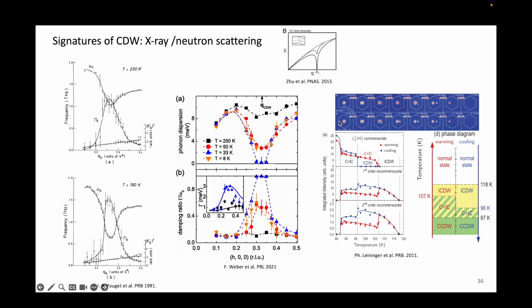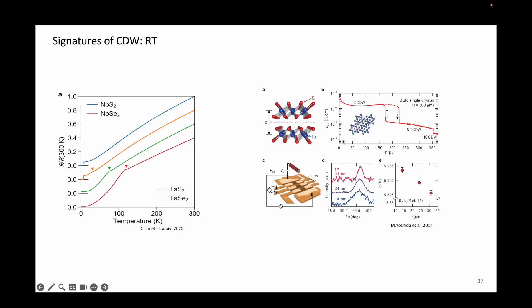Next is the R-T measurements. This is perhaps the most simplest measurement one can perform to detect the charge density wave transition. You get a crystal, stick three or four electrodes on, and perform resistance measurements as you cool down the sample.